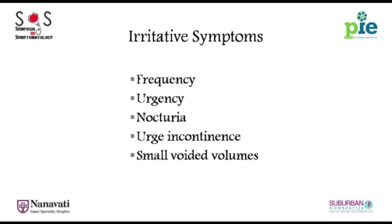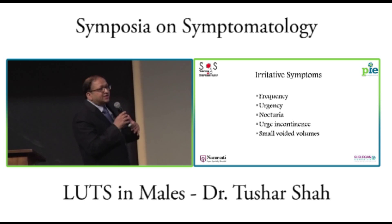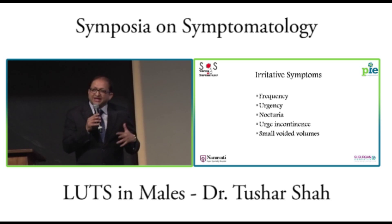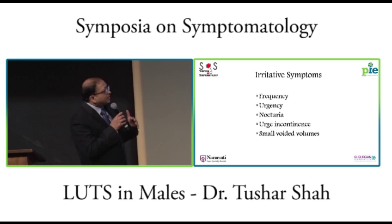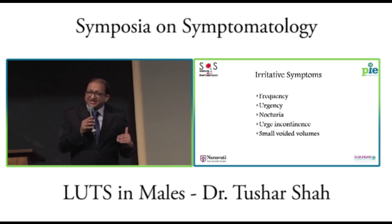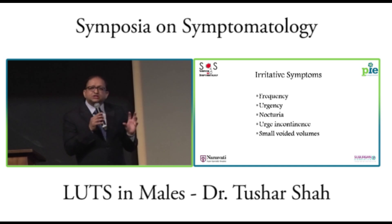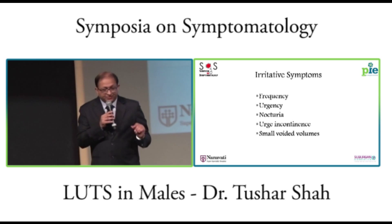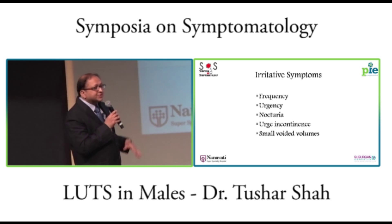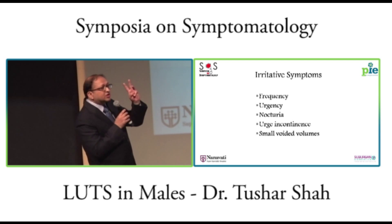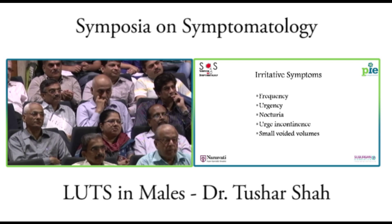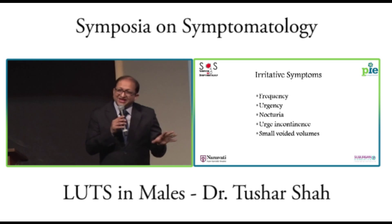The next set are irritative symptoms: needing to go again and again — frequency; needing to go immediately — urgency; needing to wake up at night multiple times — nocturia. Sometimes if you urgently need to go you leak — urge incontinence — and very small voided volumes each time. These are the two groups of symptoms in lower urinary tract disease.